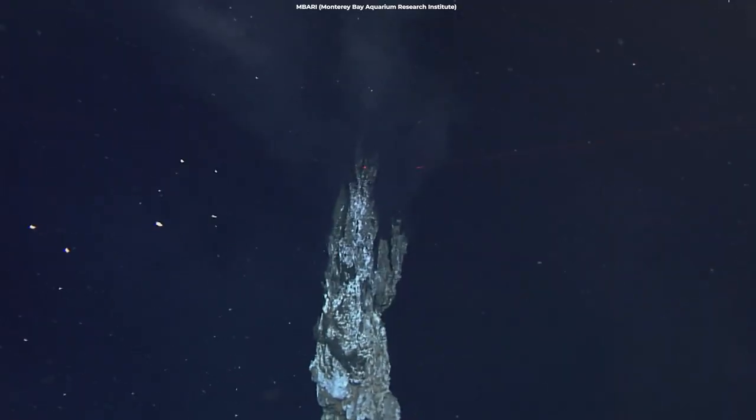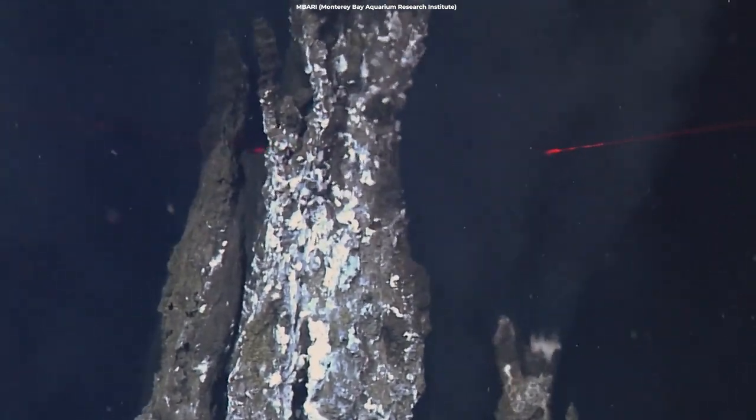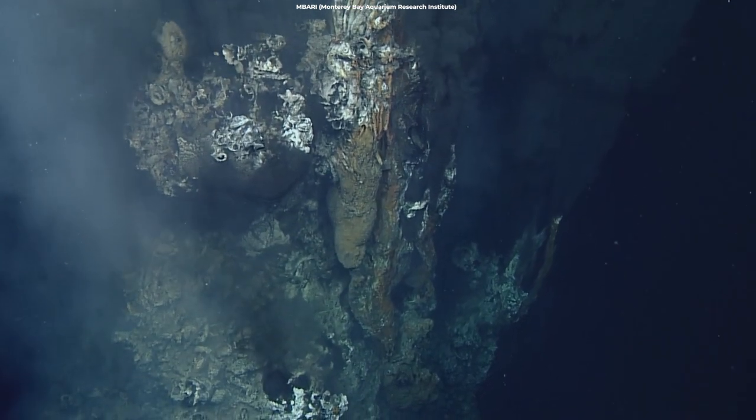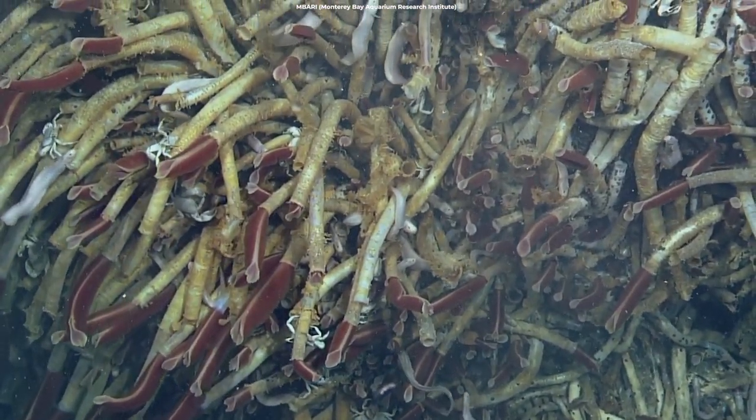Subsurface organisms might rely on chemosynthesis, using chemical reactions from geothermal vents to produce energy instead of sunlight. These ecosystems could be similar to Earth's deep-sea hydrothermal vent communities, with microbes forming the base of the food chain and supporting a diverse array of specialized organisms.